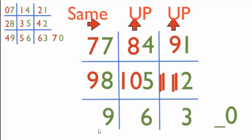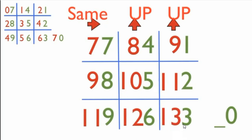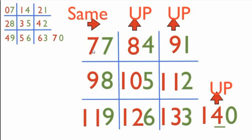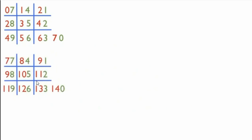11 is the same. 11 plus 1 is 12, up. 12 plus 1 is 13, up. Same up up, 14. So you got the number 77, 84, 91, 98, 105, 112, 119, 126, 133, 140. I am taking this to my left side so as to generate further more numbers.